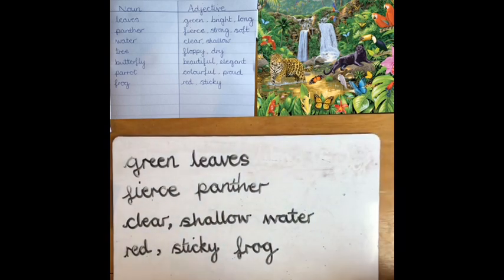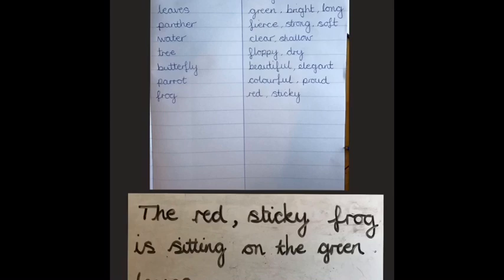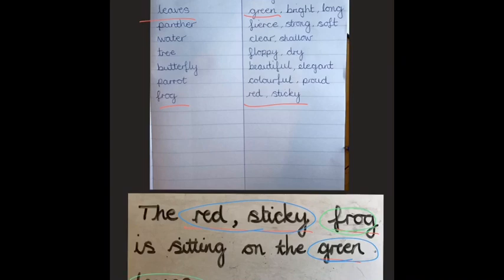Once you've made your noun phrases or expanded noun phrases, I want to see if you can put them into a very interesting sentence. If you're using expanded noun phrases, it's going to be extremely exciting. Here's my final sentence: the red, sticky frog — there are my adjectives and there's my noun — and I've also used green leaves, where green is my adjective and leaves is my noun. The red, sticky frog is sitting on the green leaves.